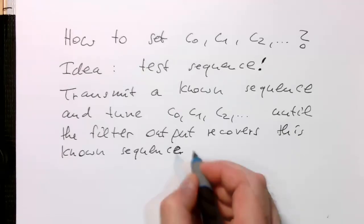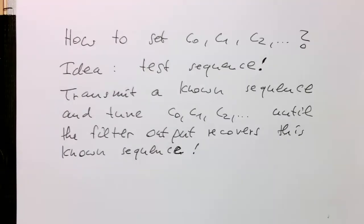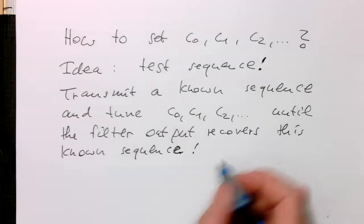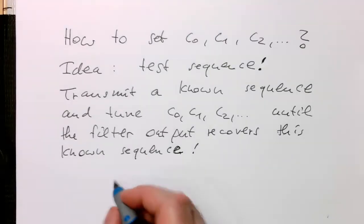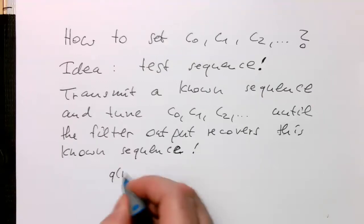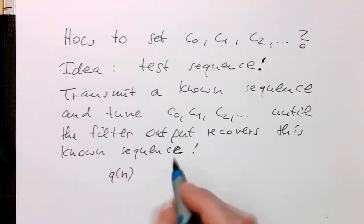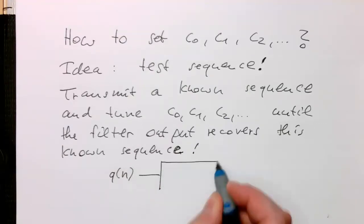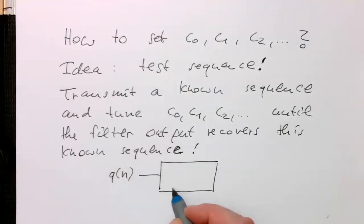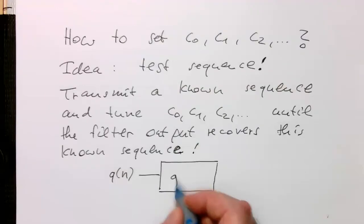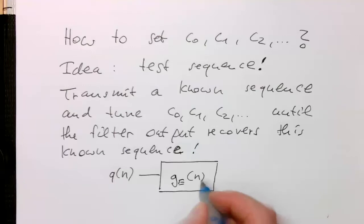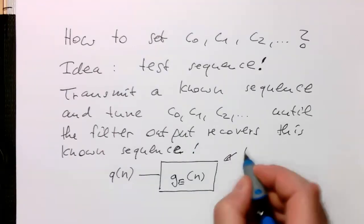So that's the idea behind that. How does it look like? So essentially if we think of our input Q of N, so now let's think of this FIR filter just as a black box here. So that's our GE of N. So that's our FIR filter.